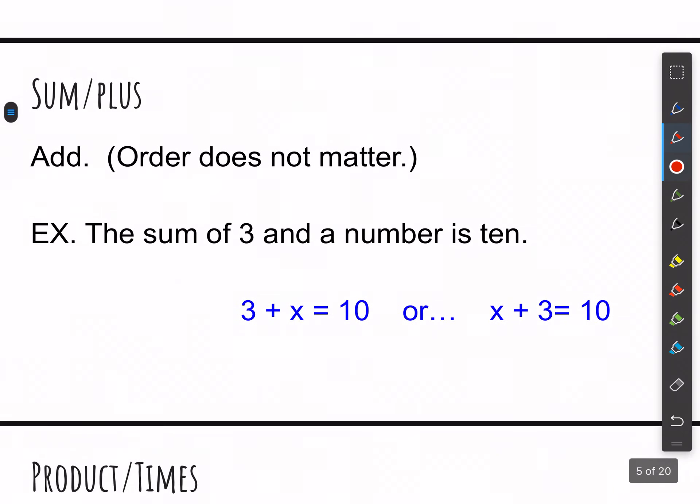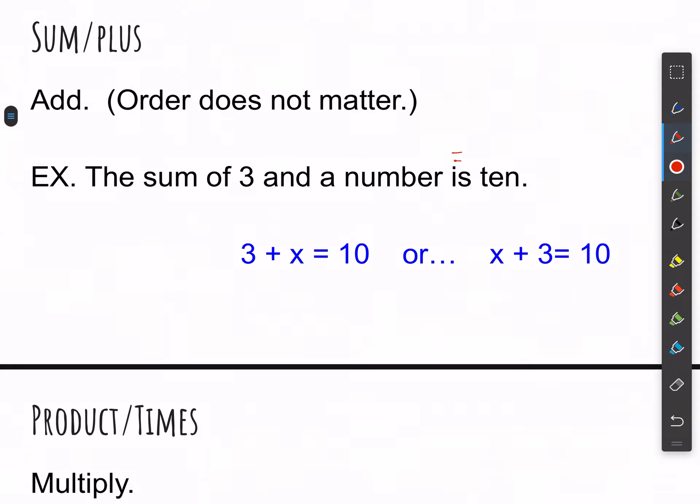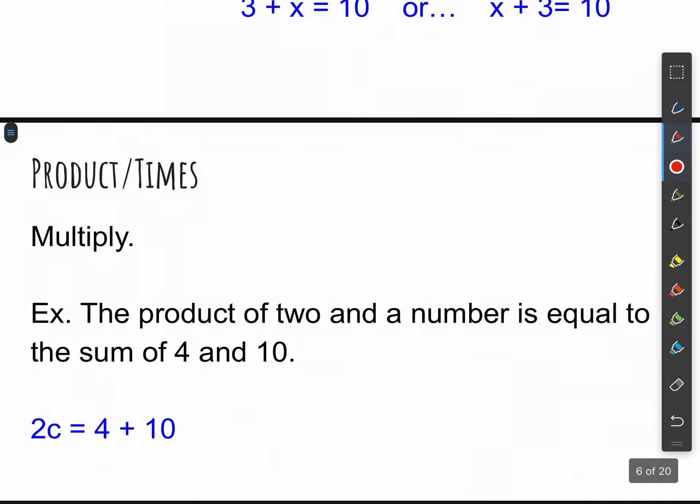And then for sum and plus, these are both names for addition, where we add things together. The sum of 3 and a number. So 3 plus some number is 10, which means equals 10. And then product and times. This is ways of saying multiplication. So we multiply. The product of 2 numbers or 2 and a number is equal to the sum of 4 and 10. The product of 2 and a number means 2 times a number.